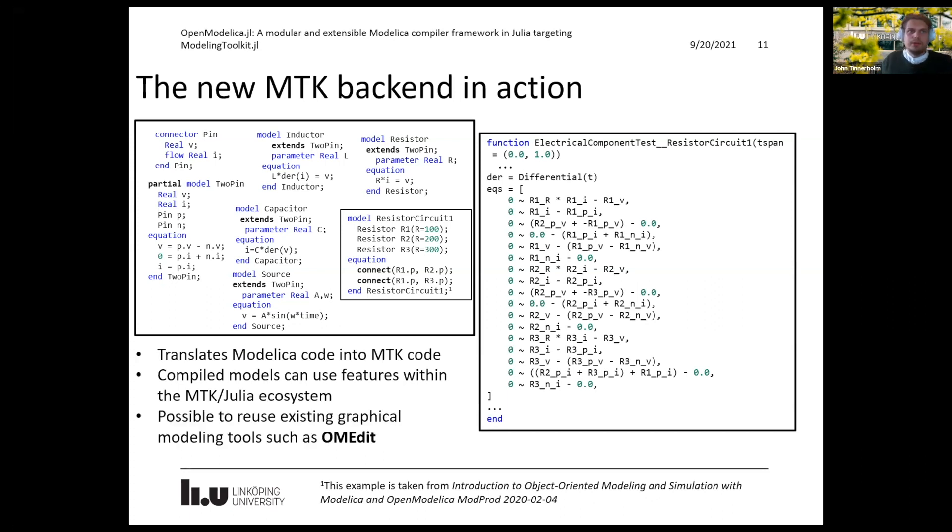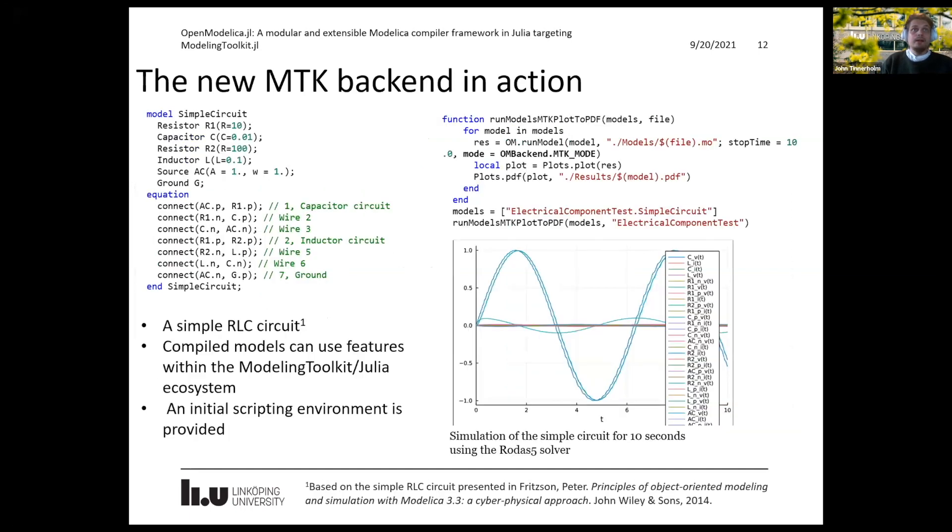And of course, it's possible to reuse existing models, existing graphical tools such as OMEdit, if you want to do modeling graphically. So here we can see an example of a simple circuit. It has a resistor, a capacitor, an inductor, a source, and a ground.